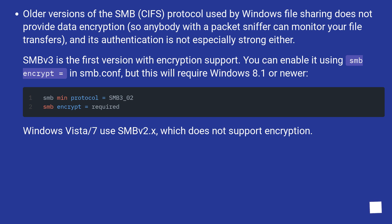SMB v3 is the first version with encryption support. You can enable it using 'smb encrypt =' in smb.conf, but this will require Windows 8.1 or newer. Windows Vista/7 use SMB v2.x, which does not support encryption.